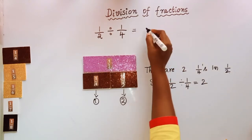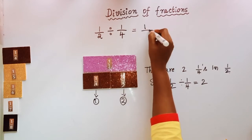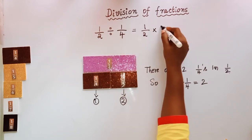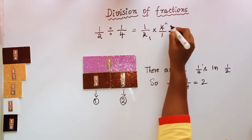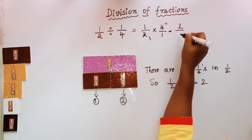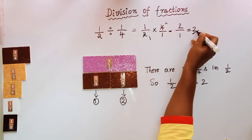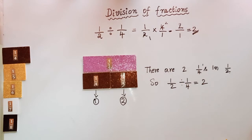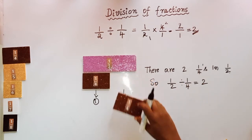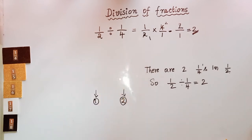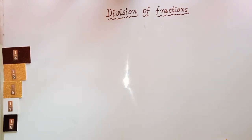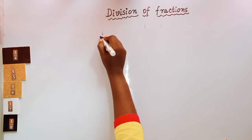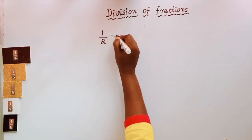This can be written as 1/2 × 4/1 — take the reciprocal, interchange the numerator and denominator of 1/4. 2 and 4 are divisible by 2: that gives 1/2 × 2/1 = 2. So 1/2 divided by 1/4 is equal to 2. Understand this correctly so that division of fractions becomes easy for you.